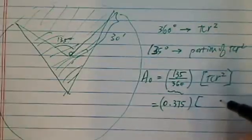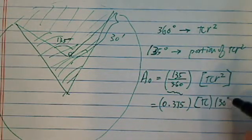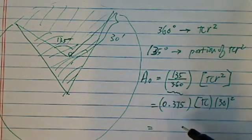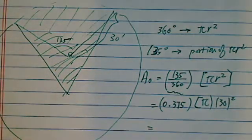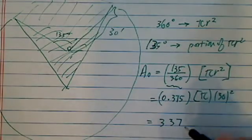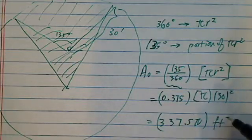Okay, the area then therefore is 0.375 times pi times 30 feet squared. This one calculated, if you push it in there, let's see what do we have. So it's 337.5 pi feet squared.